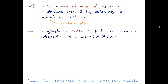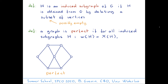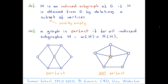Now we're ready for the definition of a perfect graph. A graph is perfect if for all induced subgraphs, omega equals chi of that induced subgraph. Here's an example of a perfect graph — you may want to verify this by checking every induced subgraph. And here's an example which is not perfect: if you remove the vertex in the middle, you get an induced subgraph which is a 5-hole, and that is not perfect because omega = 2 while chi = 3.